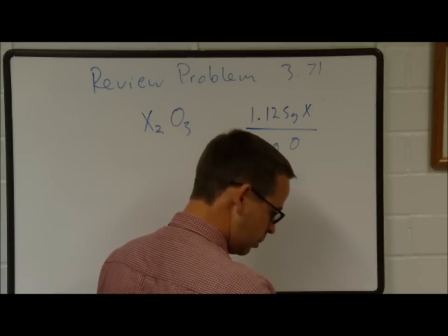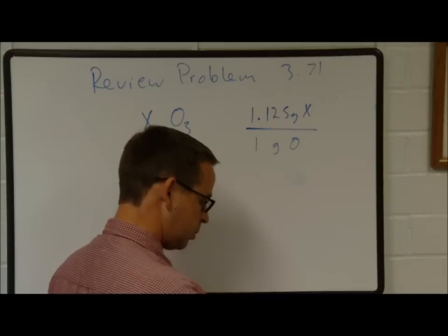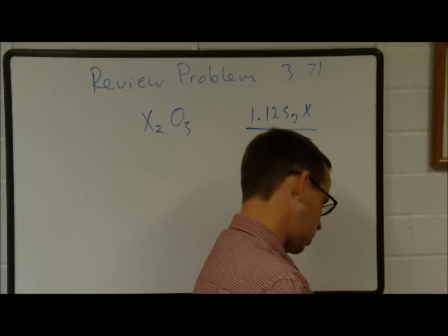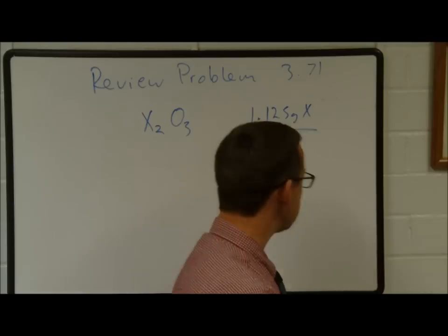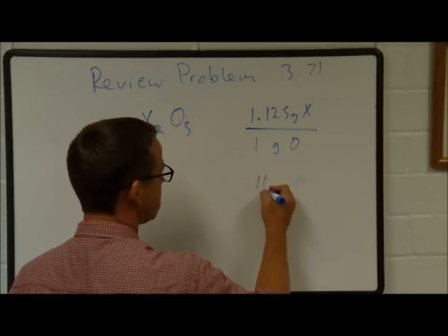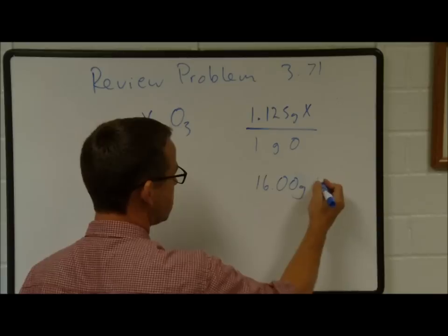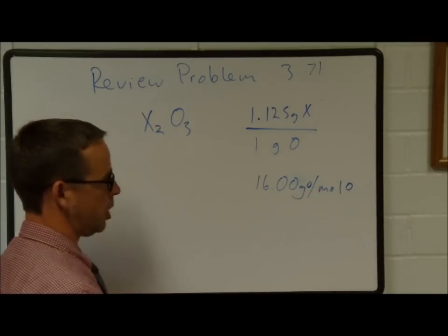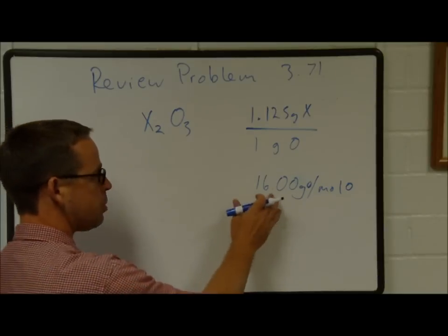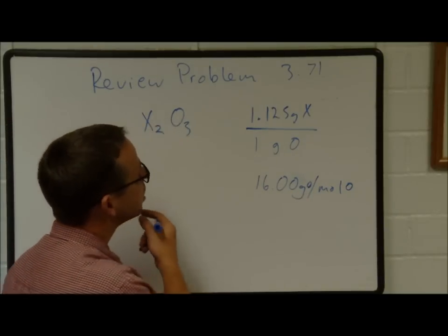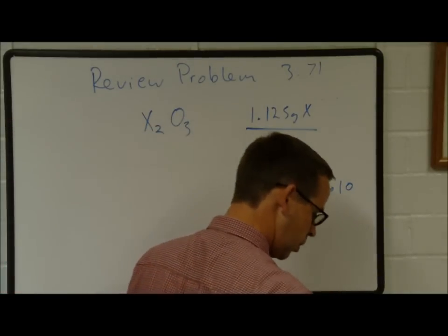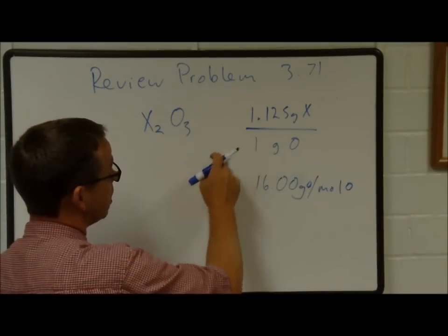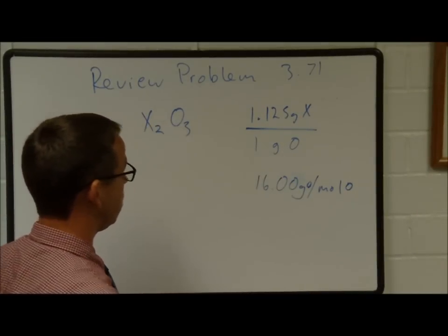Oxygen has an atomic mass of 16.00 grams per mole from the periodic table. That's how many grams of oxygen you need to have one mole of oxygen. We know there's 1.125 grams of X and one gram of oxygen. The molar ratio is two X's for three O's. For every two X's there's three oxygens.